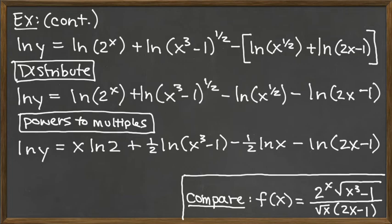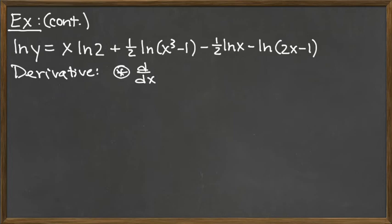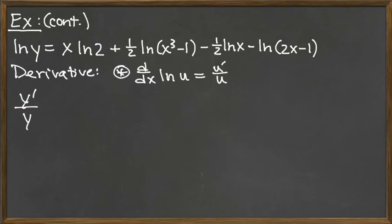Up to this point, we haven't actually taken the derivative yet — we've only done algebra to set up for the derivative. But the derivative is pretty quick at this point. We're going to remember that the derivative of natural log of u is u prime over u — that's 1 over u times u prime from the chain rule. Since we have addition and subtraction on the right, this goes really quickly. We get y prime over y on the left-hand side.